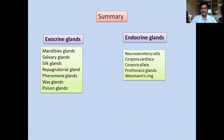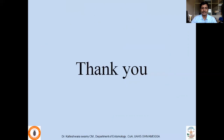In summary, the exocrine glands studied include mandibular glands, salivary glands, silk glands, epignathoidal glands, pheromone glands, wax glands, and poison glands. The important endocrine glands studied are neurosecretory cells, corpora cardiaca, corpora allata, prothoracic glands, and Weismann's ring. Thank you — if you have any specific questions, you can email me or post them below.